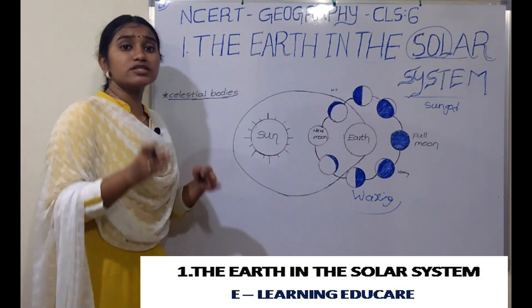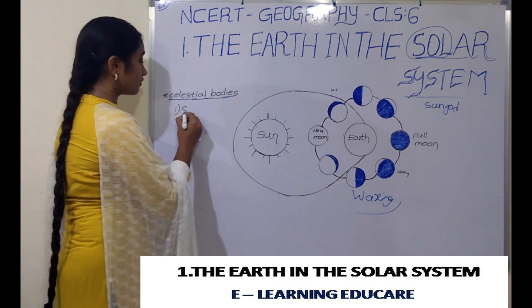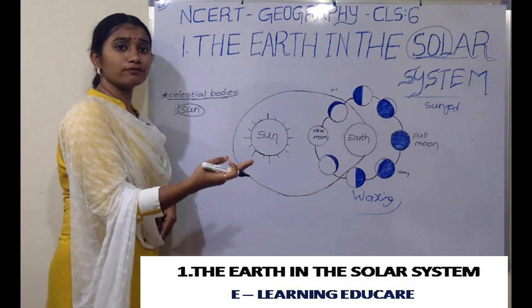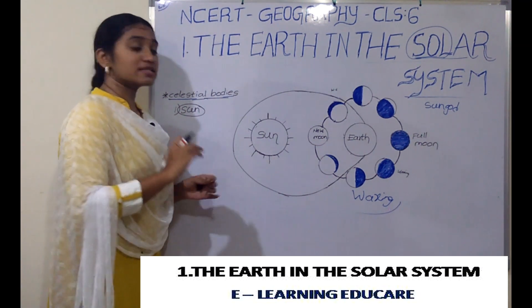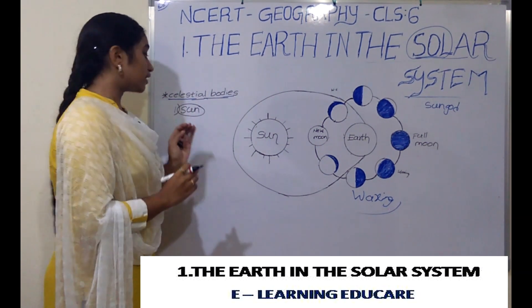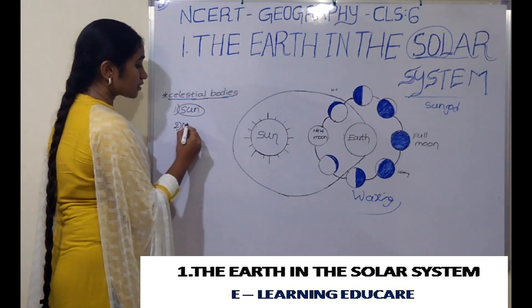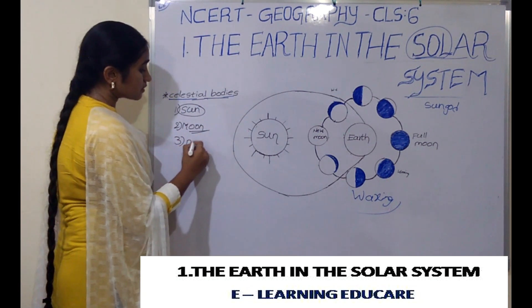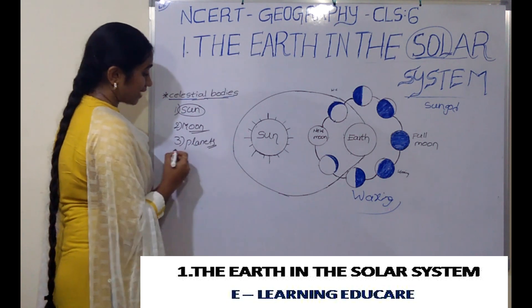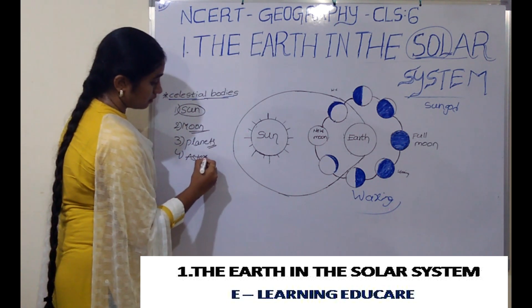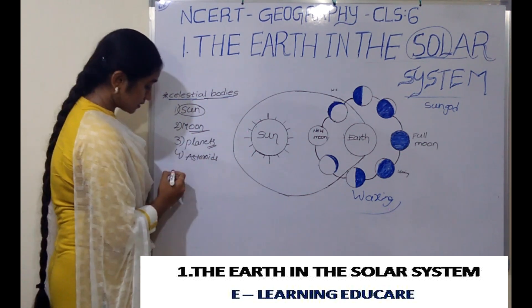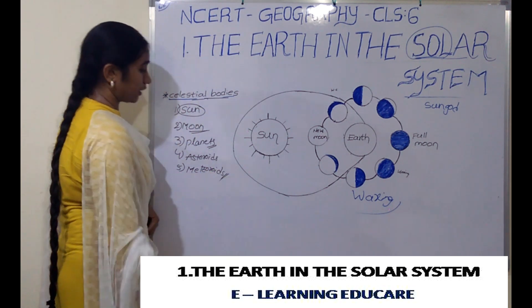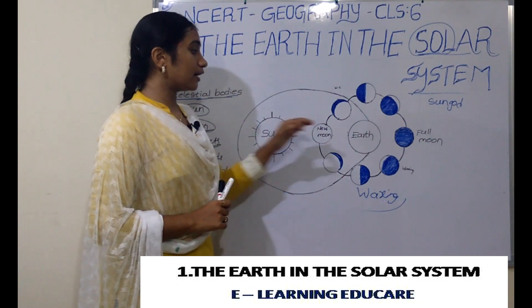Now, which elements are related to the sky? The first one is the Sun. Can we say the Sun is referred to as a Celestial Body? Obviously — it is part of the universe, it is the head of the solar system, and it is positioned in the sky. So the Sun is a Celestial Body. The Moon is also a Celestial Body. Planets, asteroids, and meteoroids are also Celestial Bodies.